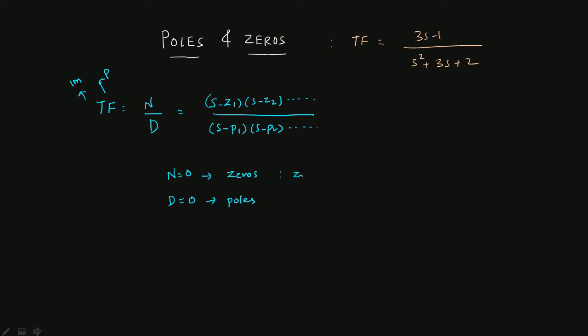So you will get z1, z2, z3 — all the zeros of the transfer function — and all the poles p1, p2, p3 and so on. Once you have obtained those, the next task is to plot them on a graph.